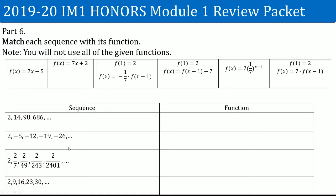Part 6 — match each sequence with its function, and use all of the given functions. The first sequence is 2, 14, 98, and so on. I computed the common ratio and got r equals 7, with a first term of 2. I looked for a function that gives a first term of 2 and a common ratio of 7. This is the correct match — it's the geometric one. The others are arithmetic.